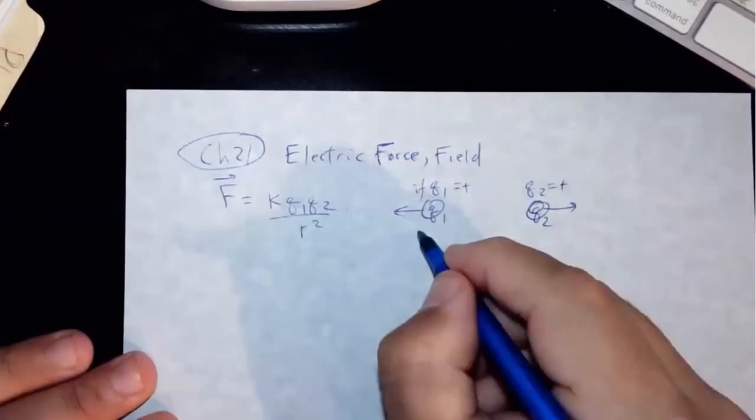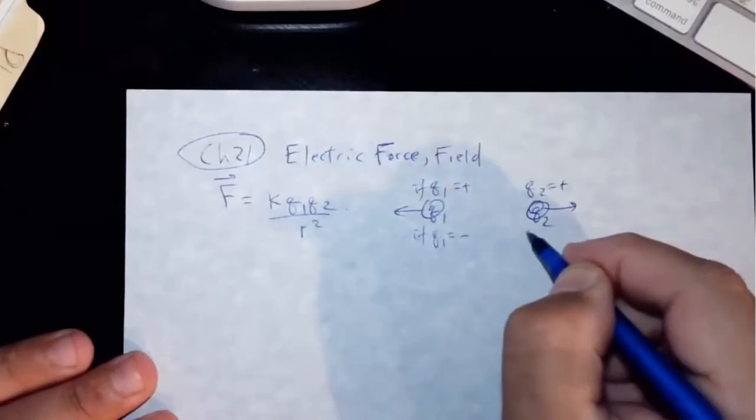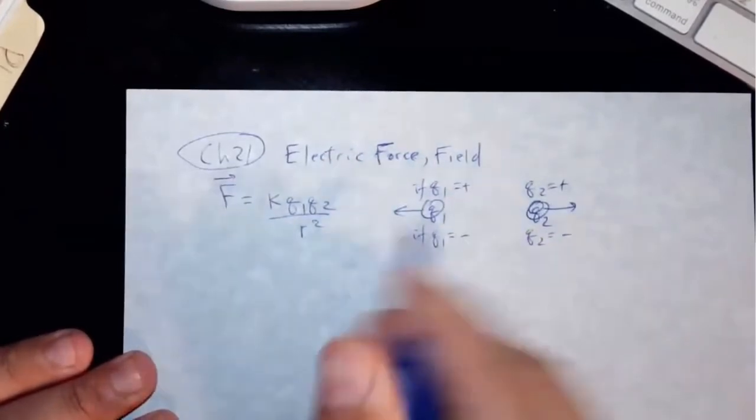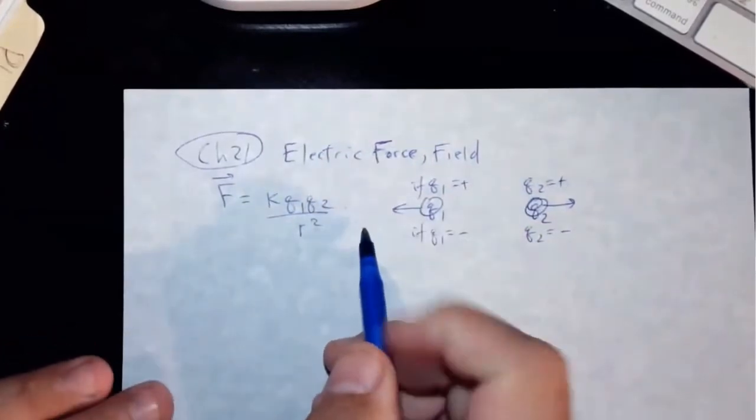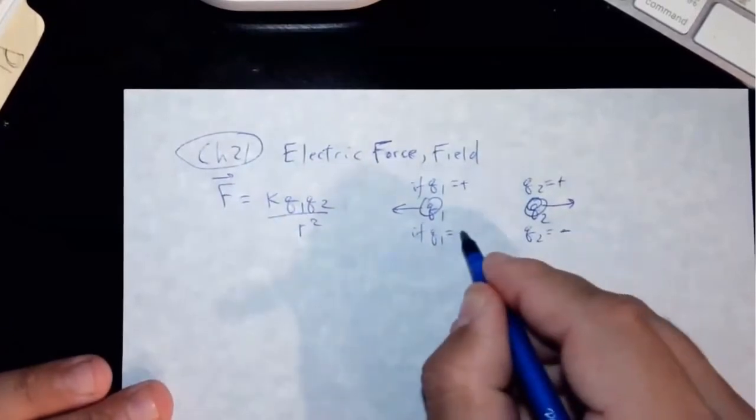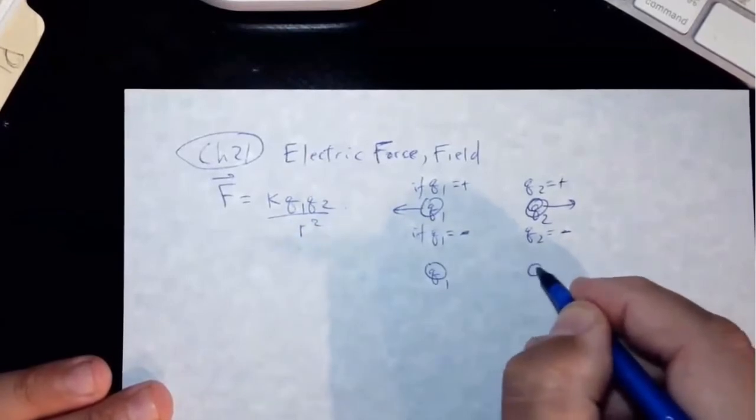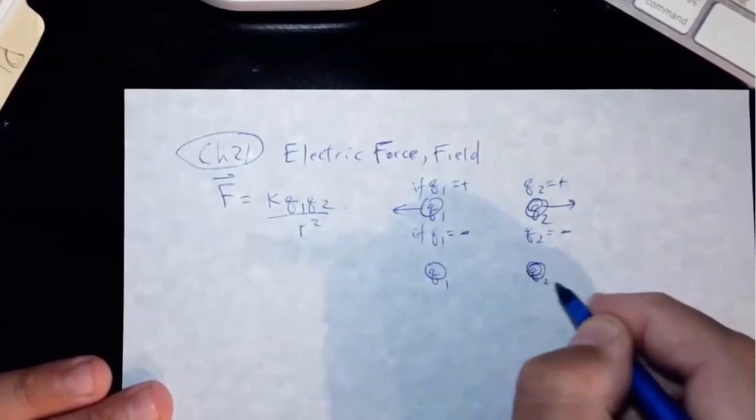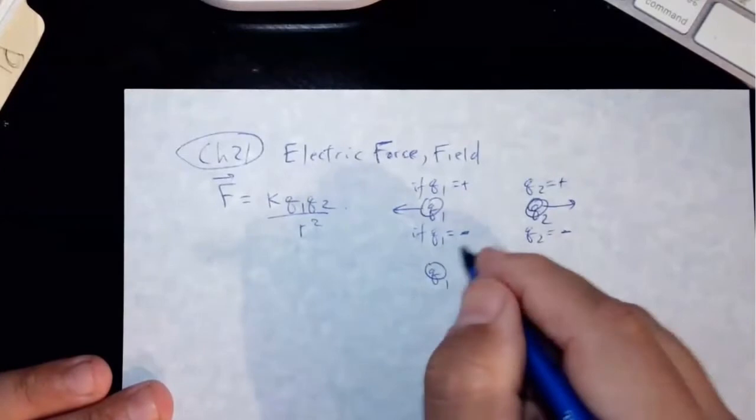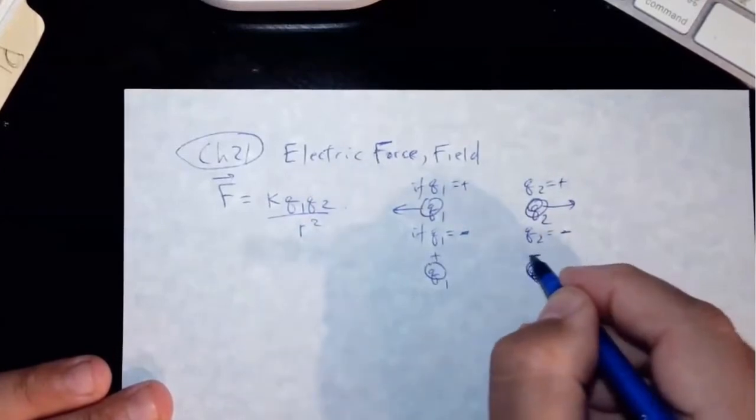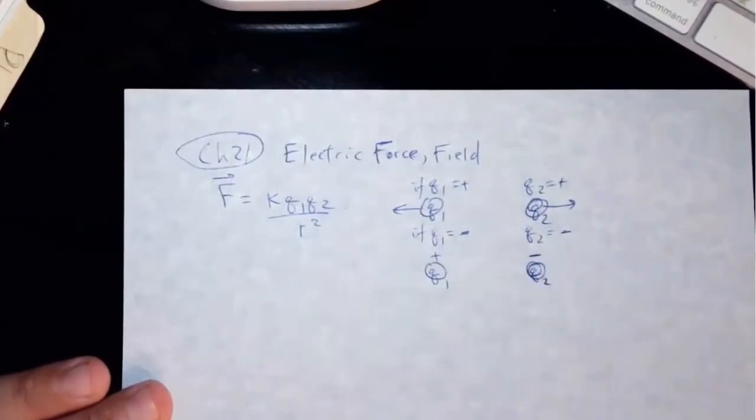And if Q1 is negative and Q2 is negative, they also repel each other. And then two unlike charges, Q1 Q2. So if they're positive and negative, then they will attract each other.